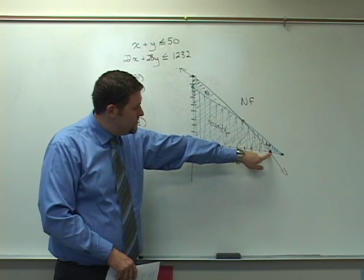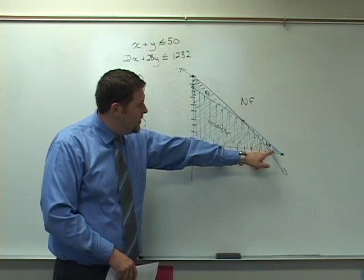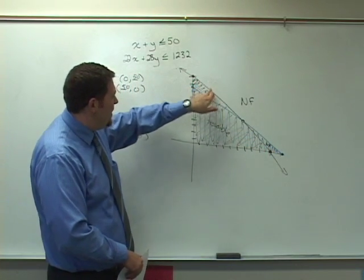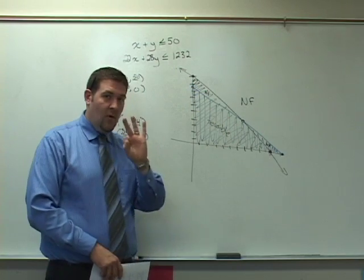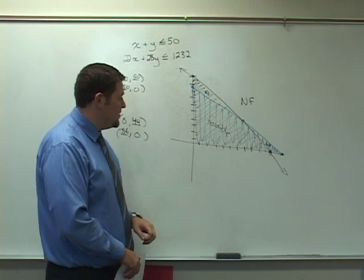Now none of this singly shaded region is part of the feasible region. So I don't include those, nor do I include this non-feasible region. So we have three points that make up the corners, as well as 0,0 that makes up the corner to this feasible region.